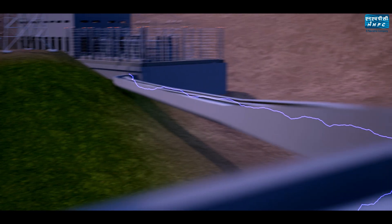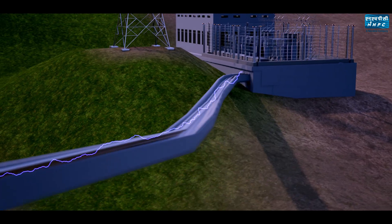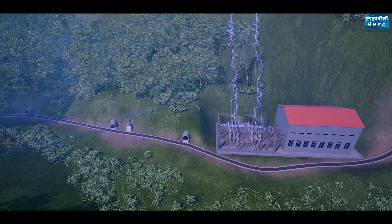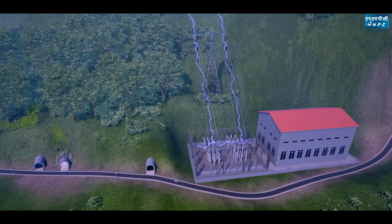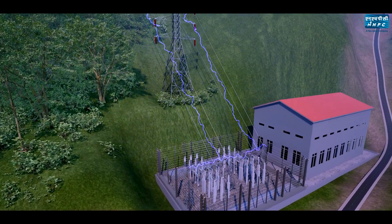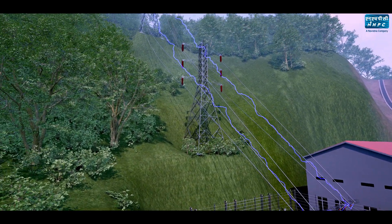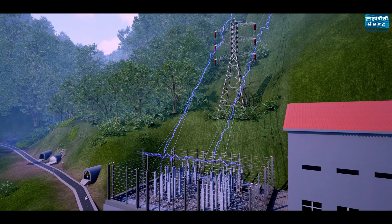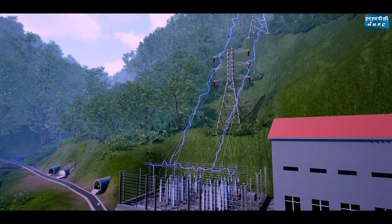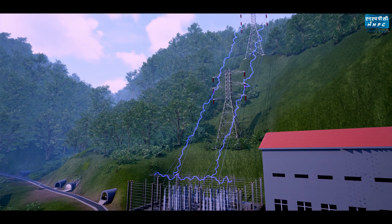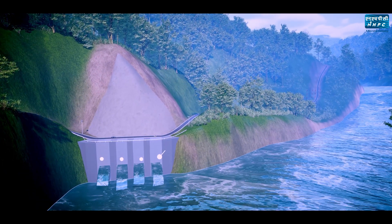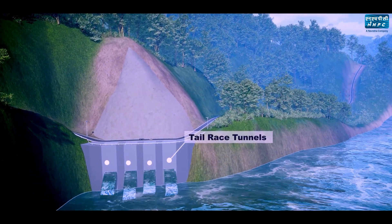Power generated from the project is evacuated through a 220 kV double circuit transmission line of 12.5 kilometers approach length up to the PGCIL pooling station at Rangpo. After electricity is generated, water flows back into the river through the tail race tunnels.